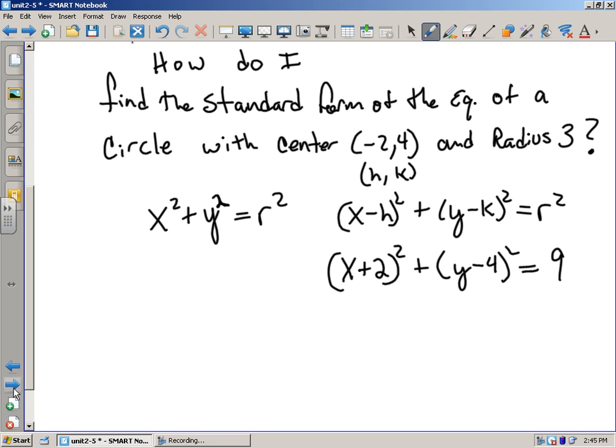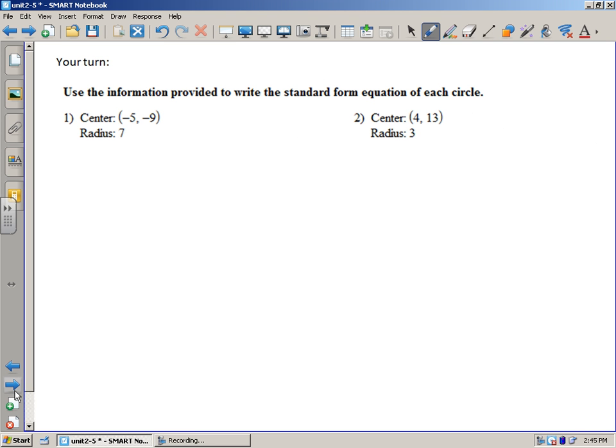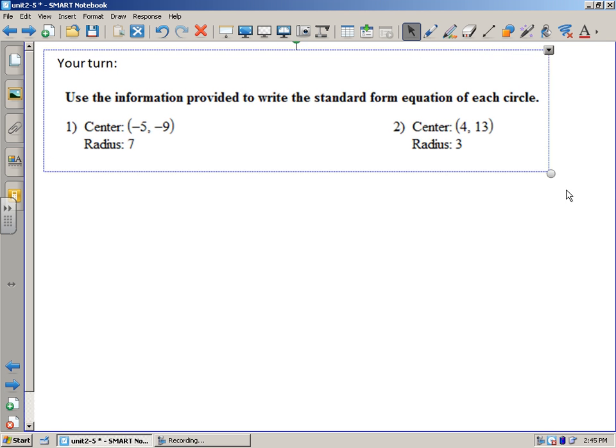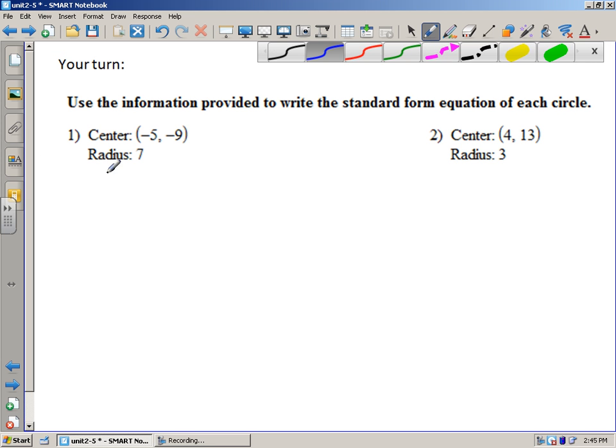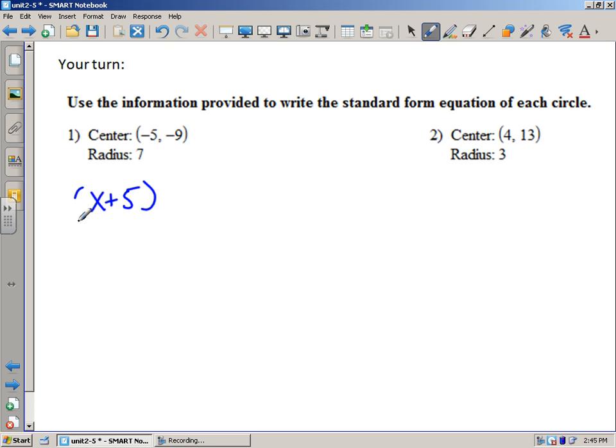So let's do another example. Here are some examples we did in class. If I give you the center at negative 5, negative 9, the radius is 7, then what do we have? That's just x minus h, so x plus 5 squared plus y plus 9 squared equals, radius is 7, so 7 times 7 is 49.